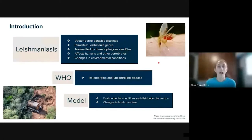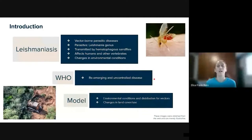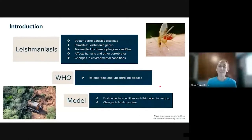The World Health Organization has characterized leishmaniasis as a re-emerging and uncontrolled disease. In relation to this disease, it is important to know the environmental conditions necessary for vectors and their distribution, to be conscious of where the risk is. With respect to the causes of leishmaniasis, it is necessary to identify where changes in land cover are happening.